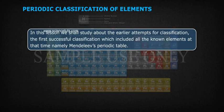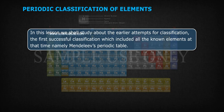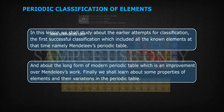In this lesson, we shall study about the earlier attempts for classification. The first successful classification, which included all the known elements at that time, namely Mendeleev's periodic table, and about the long form of modern periodic table, which is an improvement over Mendeleev's work. Finally, we shall learn about some properties of elements and their variations in the periodic table.